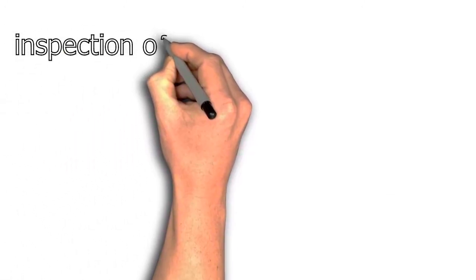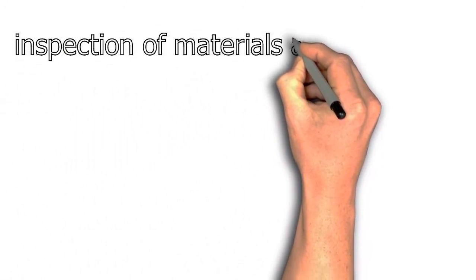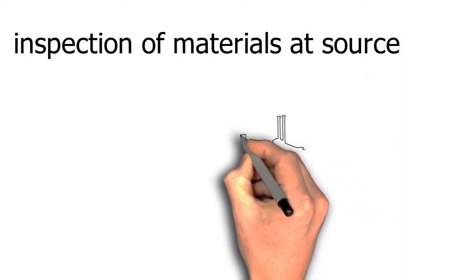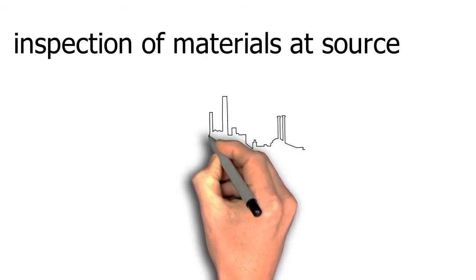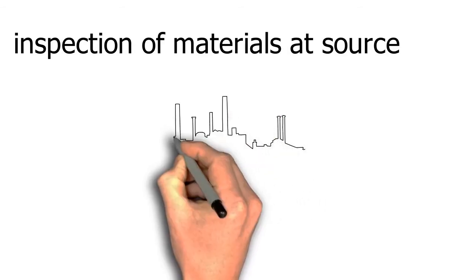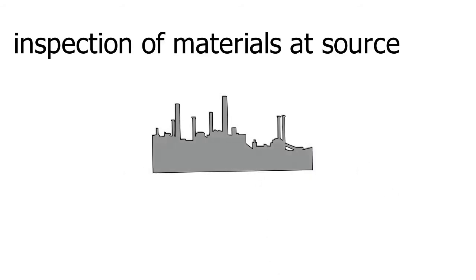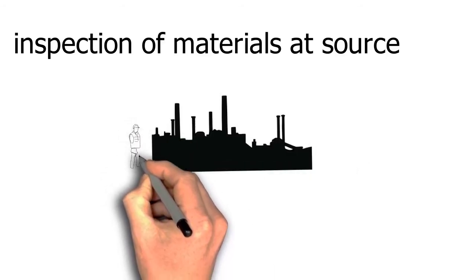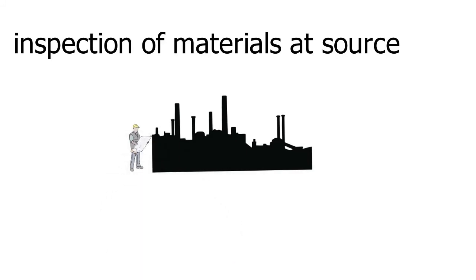Inspection of materials at sources: The contractor and the manufacturer of materials assist and cooperate with the engineers. In carrying out the inspection, the engineer has the right to enter areas of the plant where the manufacture or production of materials is carried out.